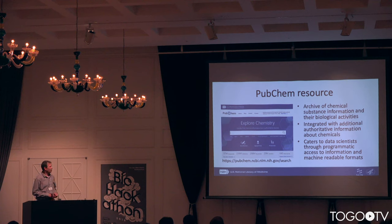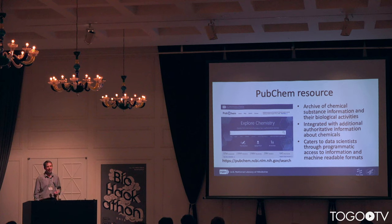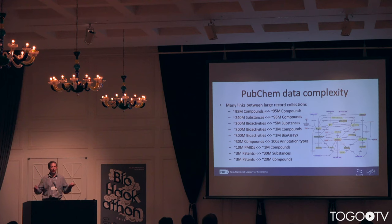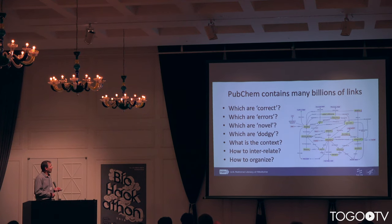We have this PubChem resource, and it's an archive. It contains chemical substances and biological activities. What we do is integrate a bunch of authoritative content, and we really cater to data scientists, provide lots of programmatic APIs, because we have huge amounts of information — tens of millions, hundreds of millions of things against millions, tens of millions, hundreds of millions of things. Chemistry touches everything. Everything is chemistry when it comes to the biomedical sciences. We contain so many billions of links.